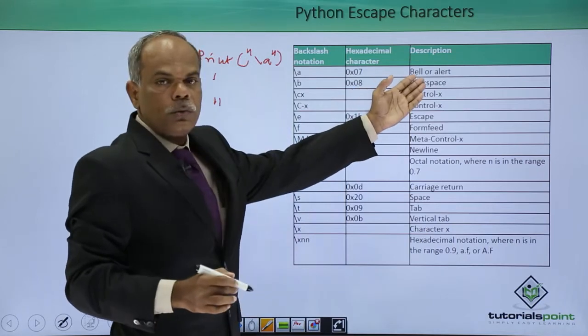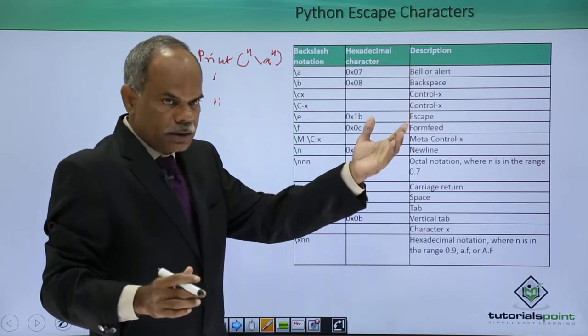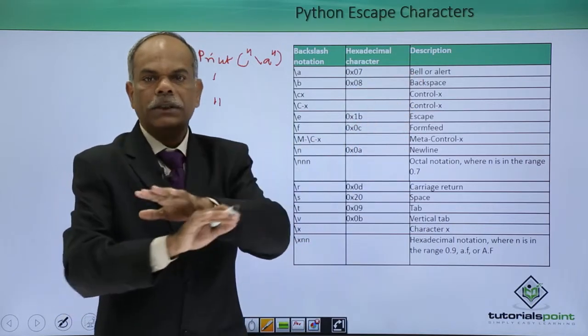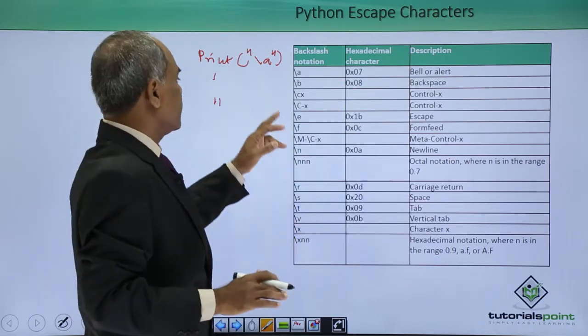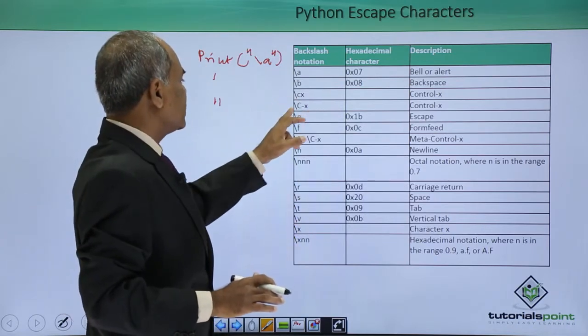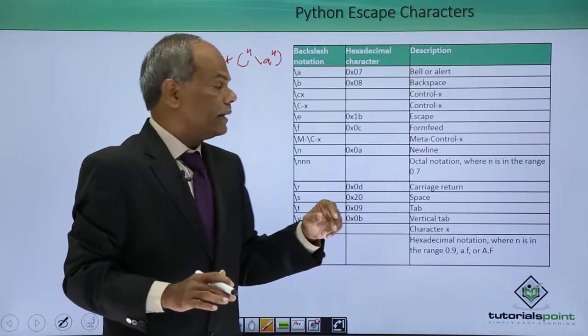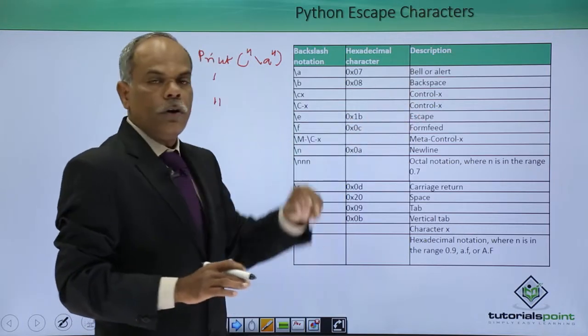Similarly, slash b is equivalent to a backspace. The character preceding that will be erased. These are slash c x or slash capital C x, which are standing for control x.